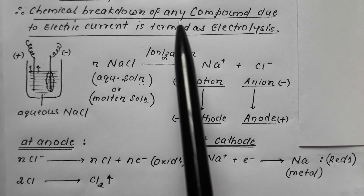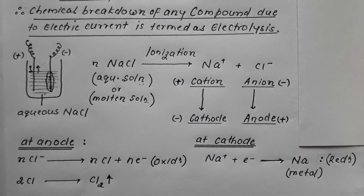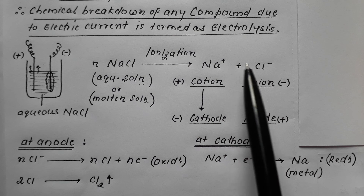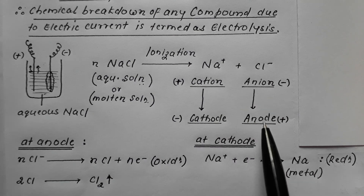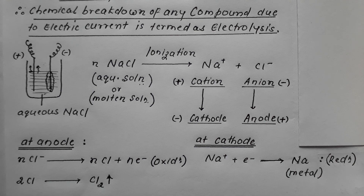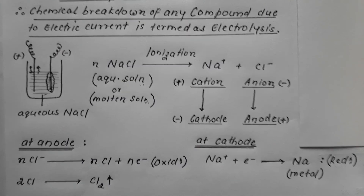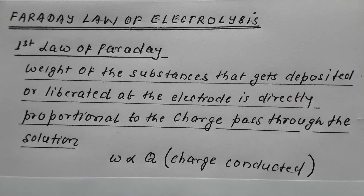So electrolysis is the chemical breakdown of any compound due to electric current. More elaborately, it is the movement of ions toward their respective electrodes under the influence of an applied electric field, undergoing chemical change at the electrode. This electrolysis is governed by two rules: the First Law of Faraday and the Second Law of Faraday.